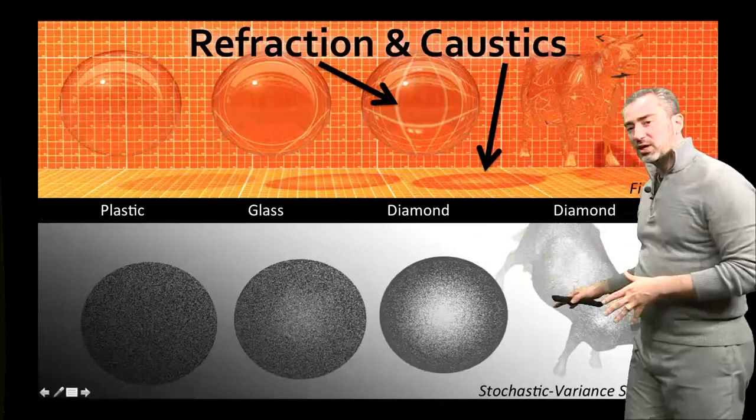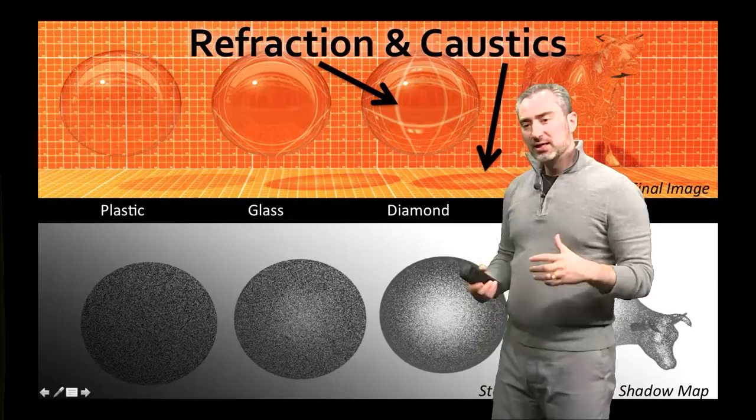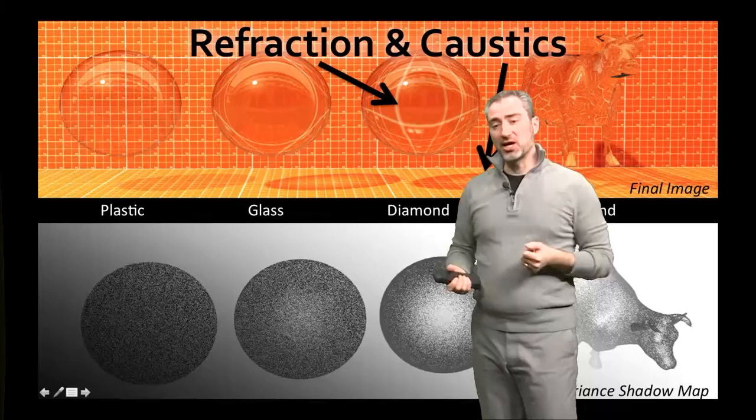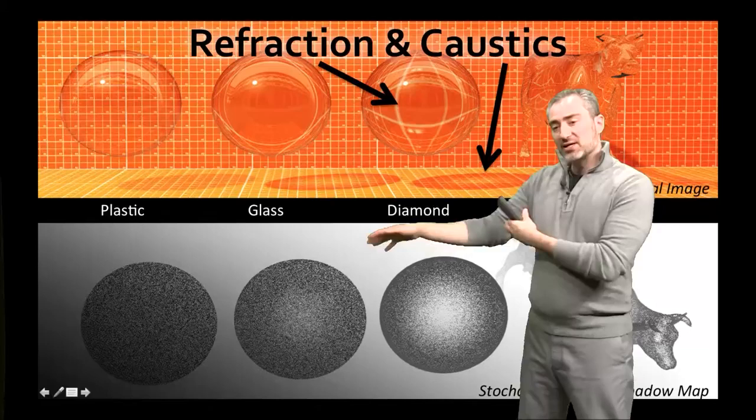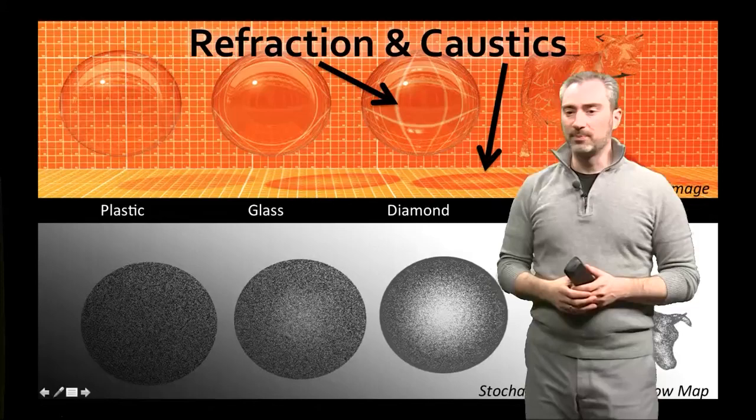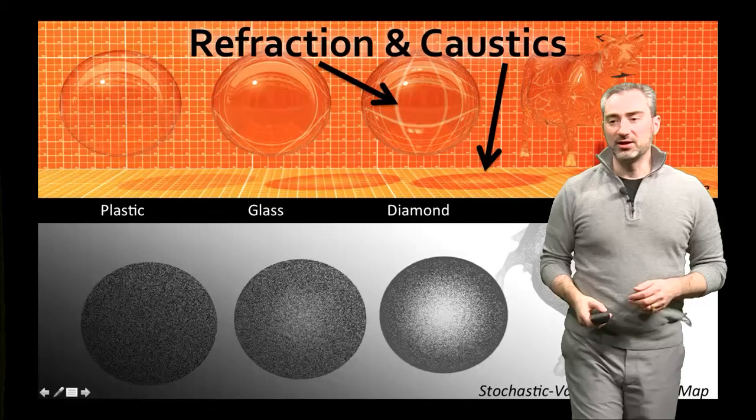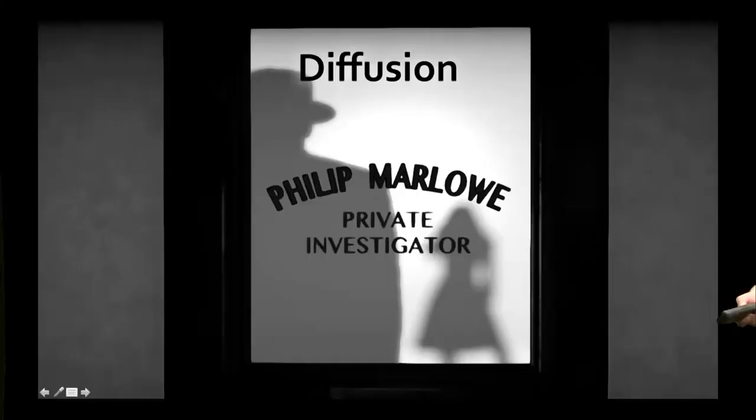At the bottom is a visualization of the stochastic shadow map before computing variance from it, cropped to the section visible in the image above — the actual map is much larger. The key idea is that the noise from stochastic shadowing gets blurred out when put into the variance shadow map representation, and you can see the light getting focused toward normal incidence even on a complicated shape such as the cow.